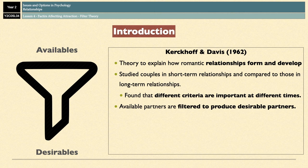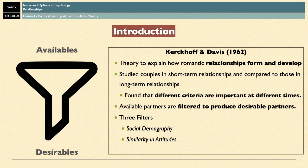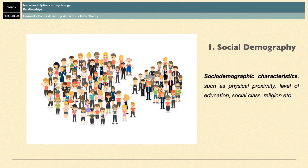According to this theory, there are several levels of filters that people apply in order to find the correct partner for them. The three filters they apply are social demography, similarity in attitudes, and complementarity. The first filter is social demography. Social demographic characteristics are factors that influence the chances of people meeting in the first place.